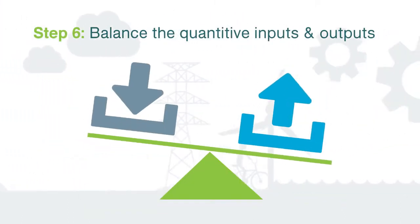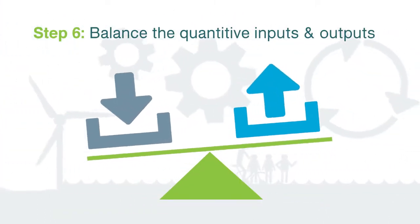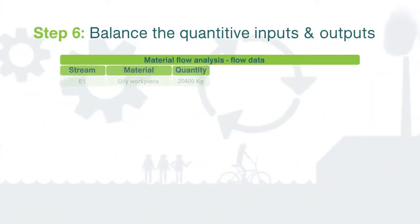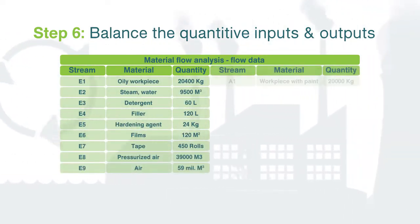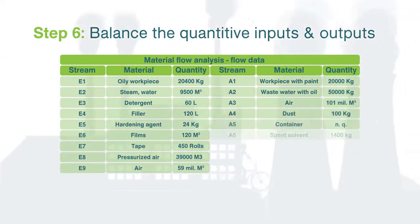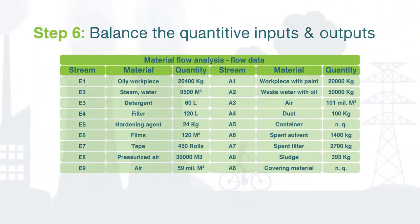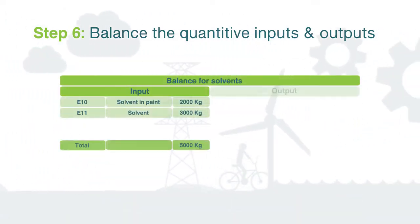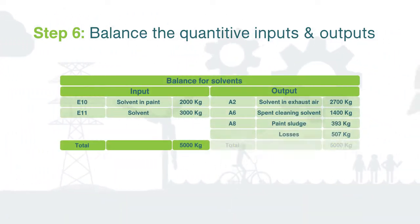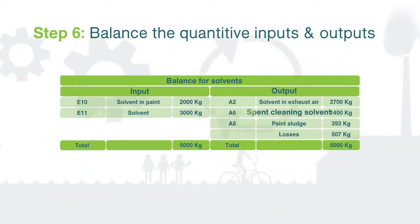Step 6: balance and quantify the inputs and outputs for the whole system and the individual steps. Step 6 provides the user with an overview summary of all the streams entering and leaving the process and their quantities.